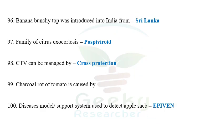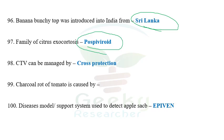The next question: banana bunchy top virus was introduced in India from Sri Lanka. The next question: which family does citrus exocortis belong to? Citrus exocortis viroid comes under Pospiviroidae. The next question: charcoal rot of tomato is caused by Macrophomina phaseolina. If you see charcoal rot, you can go with Macrophomina phaseolina as the answer.